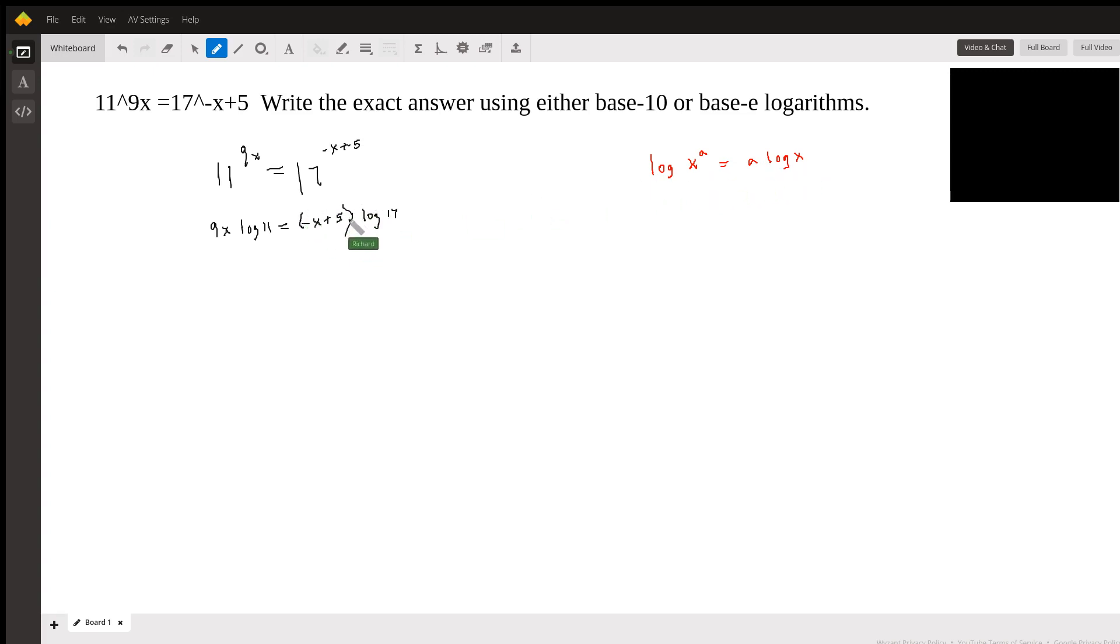Now I'm just going to distribute this log 17. Remember log 17, log base 10 of 17 is just a constant. You can find it on your calculator quickly enough. I'll do it. So log base 10 of 17 is 1.23. So it's just a constant and you can look it up on your calculator easily.